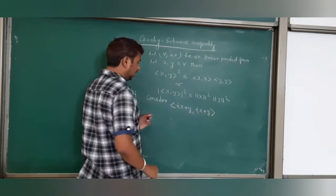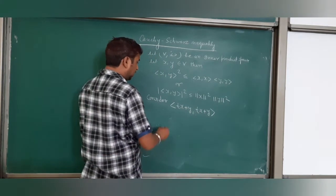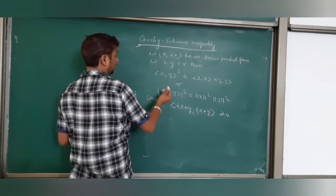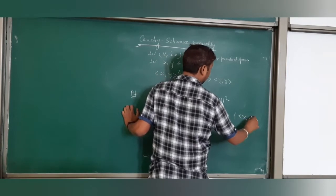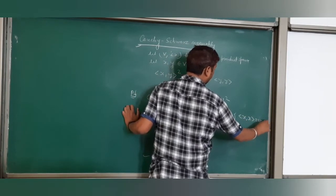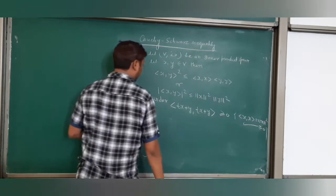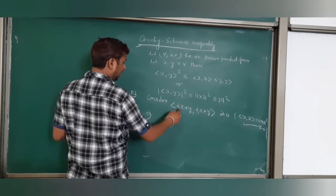We know very well if two vectors are the same, then in inner product space by properties it is always greater than or equal to zero. Because we know the inner product of x with x is x squared which is always positive, a property of inner product space. So let's open it.